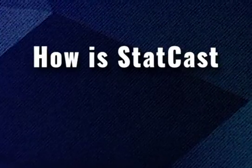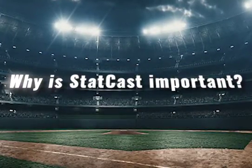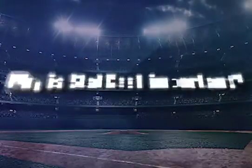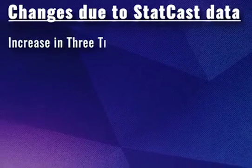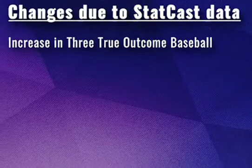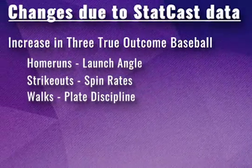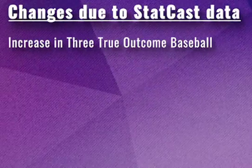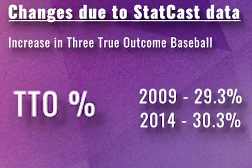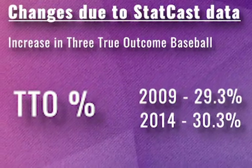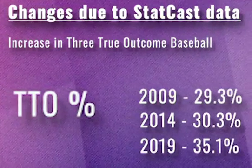Now that we've seen what StatCast is and how it's used, the question becomes: why is StatCast important? StatCast has been credited with some pretty dramatic changes to the modern game. One example is the prevalence of the three true outcomes of an at-bat — walks, strikeouts, and home runs — because they're independent of what happens when a ball is put in play. The 2009 three true outcome rate was 29.3%, which only increased to 30.3% by 2014, a 1% difference. However, fast forward to 2019 and this jumps to 35.1%. Clearly, since StatCast was implemented, three true outcome rates have gone up.